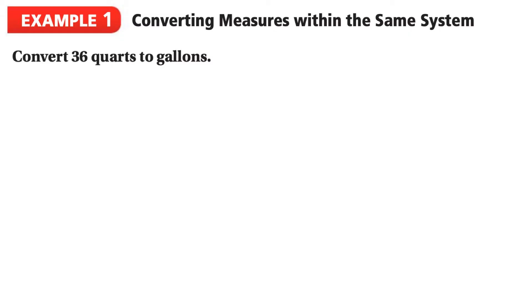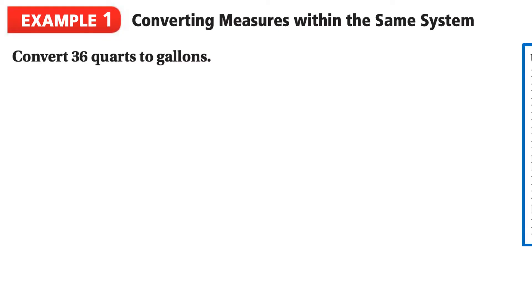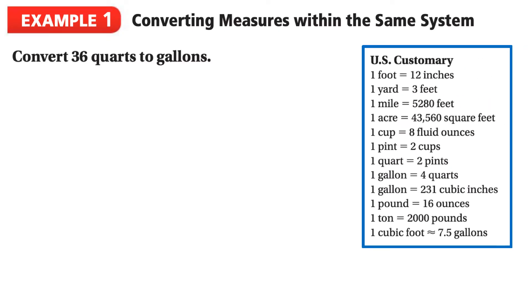Taking a look at our first example, we're going to be converting measures within the same system. We're going to convert 36 quarts to gallons. Quarts and gallons might not be super familiar, which hints that this is a US customary measurement. Looking at the reference sheet, we can see that one gallon is equal to four quarts, and we'll use this to help us solve the question.